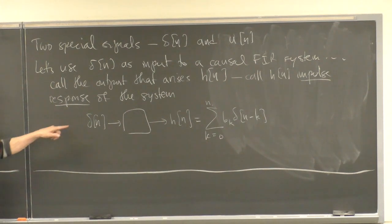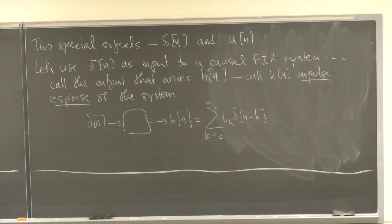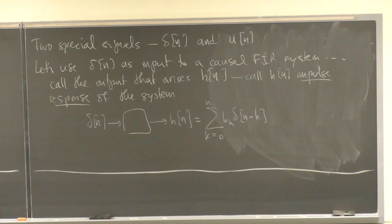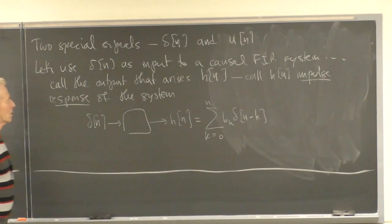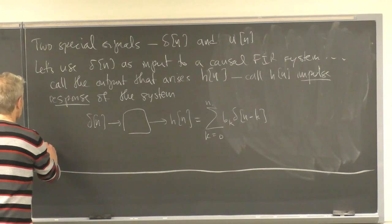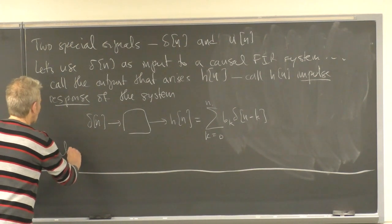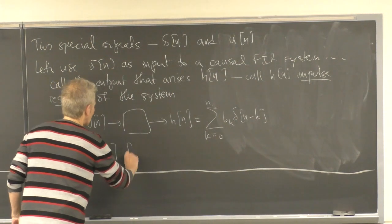You can think of the impulse response as the result of a single special IO experiment on the system. The system is sitting on the table; at time 0 you kick it — you give it a 1 at time 0 and see what happens after that. It turns out we can figure out the impulse response explicitly for causal FIR systems in terms of the b's. Let's calculate h of n for various values of n.